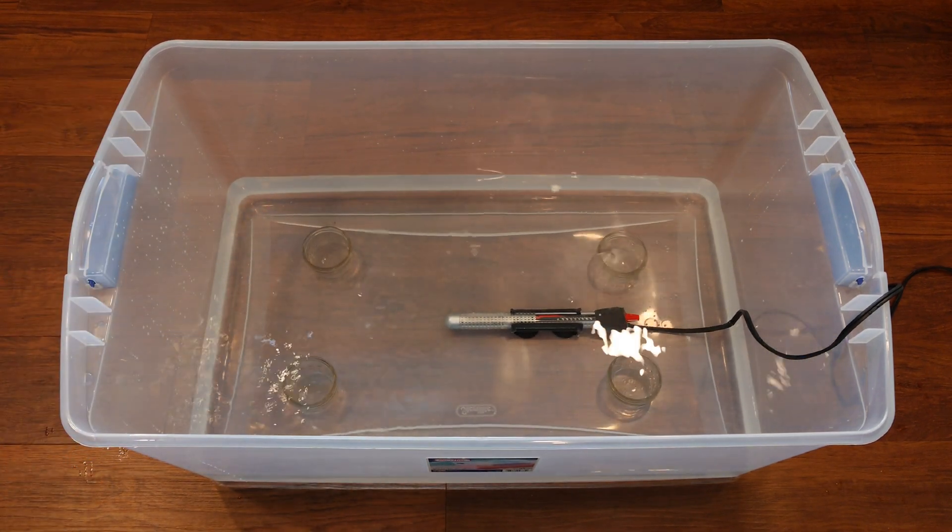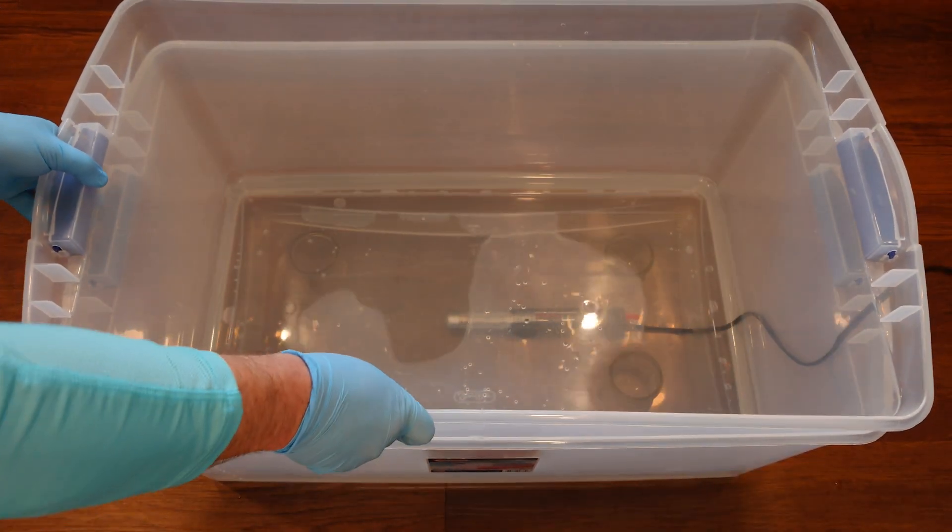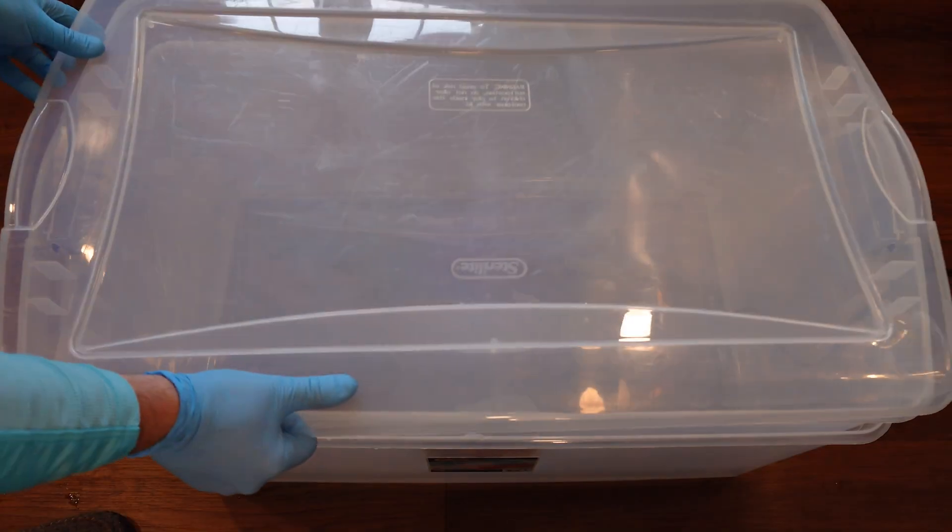It's pretty common to get some air bubbles once you nest that second tote down in there, but that's not a big deal. You can just push down gently on the bottom and work those right out of there. We're just going to add a lid, and I always cover it with a bath towel as well just for some extra insulation and to give it some shade.